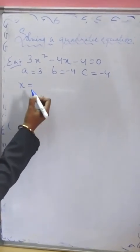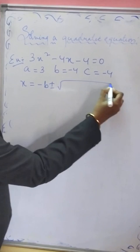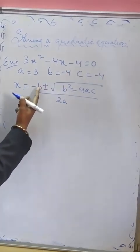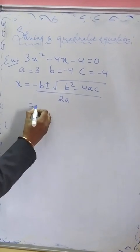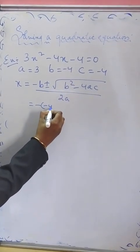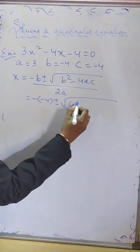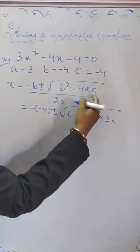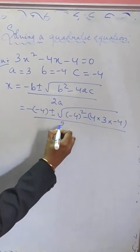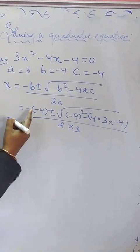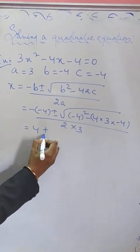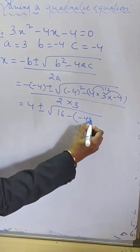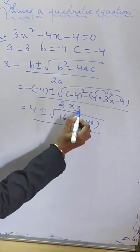We know the quadratic formula: x = (-b ± √(b² - 4ac)) / 2a. Substituting the values: -b is -(-4) = +4, b² is (-4)² = 16, 4ac is 4 × 3 × (-4) = -48, and 2a is 2 × 3 = 6. So we get 4 ± √(16 - (-48)) divided by 6.